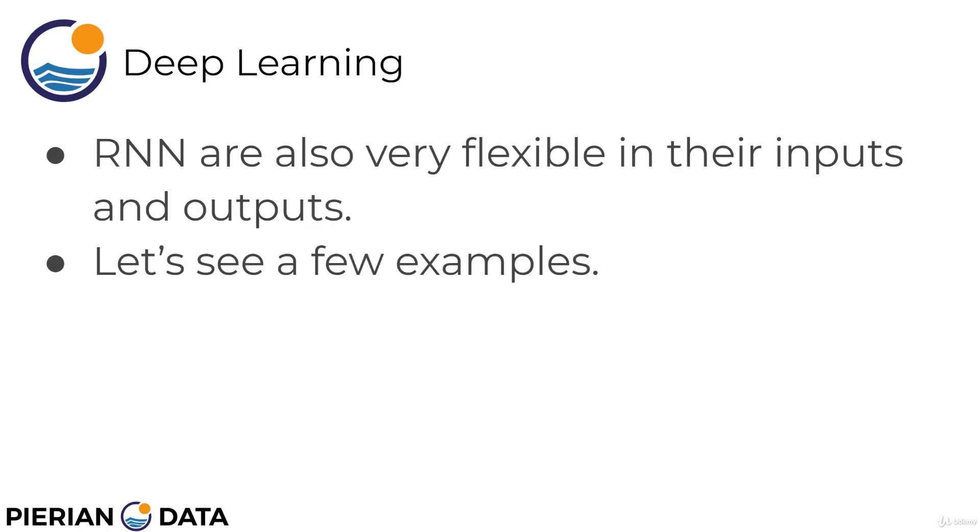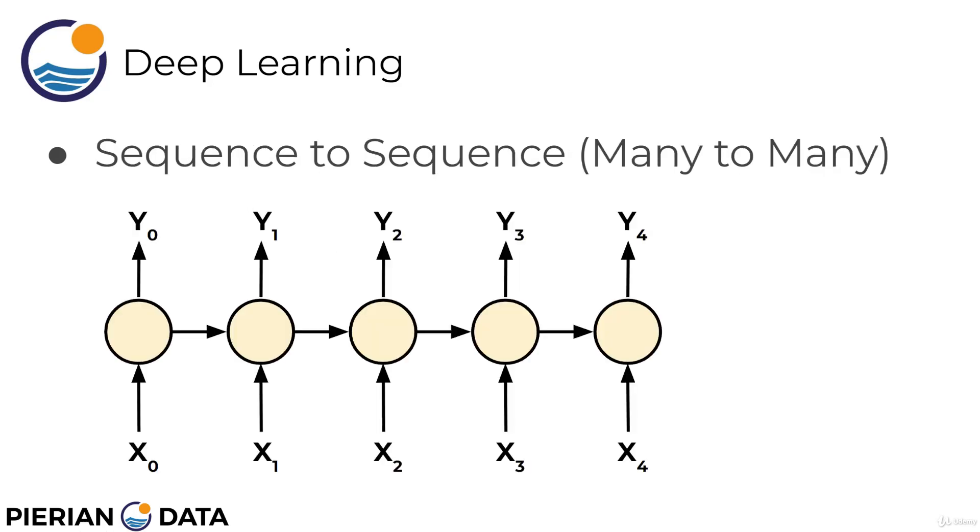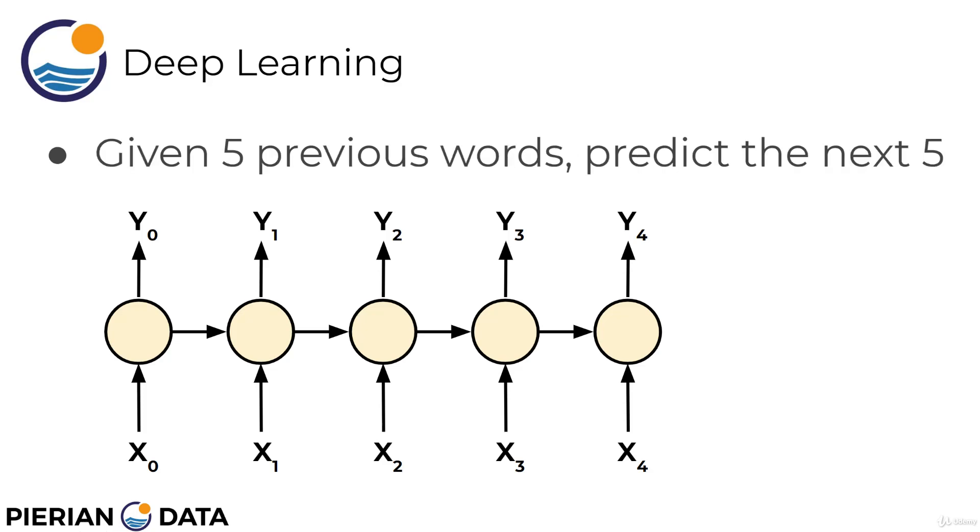Now, recurrent neural networks, as we mentioned, are very flexible in their inputs and outputs. And there's different types of architectures you can use here. Let's see a few examples. You can use a sequence-to-sequence model. So, this is also known as many-to-many. Essentially, you pass in a sequence and you expect a sequence out. So, for example, given five previous words, go ahead and predict the sequence of the next five words. And you can use this for something like, if you get a question of five words, go ahead and predict the answer of five words. Keep in mind that your data would have to reflect this. Your data would have to be matching sets of sequences of something like a question to an answer. And theoretically, you could train a chatbot if we had a data set large enough for this sort of thing.